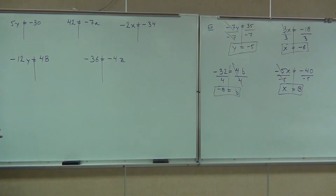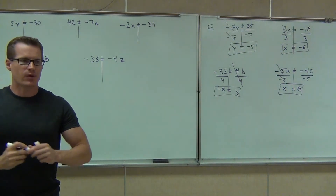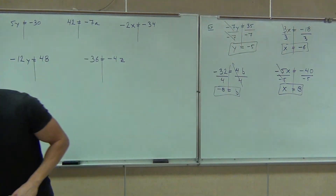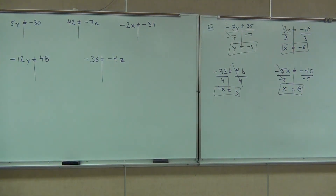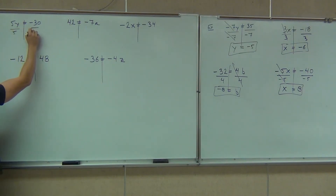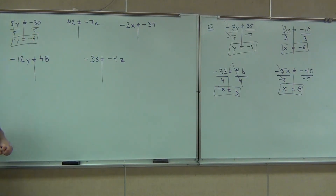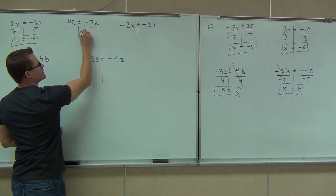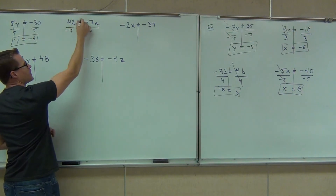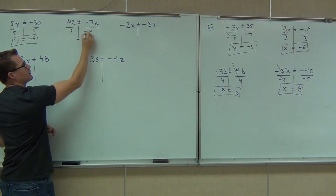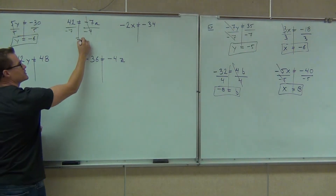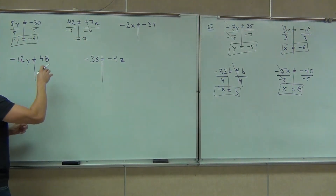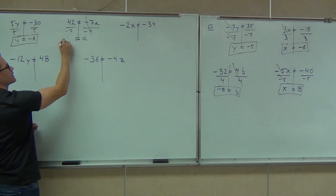I like to draw that vertical line to tell me what I do on one side, I have to do the exact same thing on the other side. So on our first one, 5y equals negative 30 — divide both sides by 5, and we get y equals negative 6. Next, we notice the variable is on the right-hand side with negative 7 multiplied by a. We divide both sides by negative 7 — that's the only way to create a positive a. The negative 7s create 1, and 42 divided by negative 7 gives us negative 6.